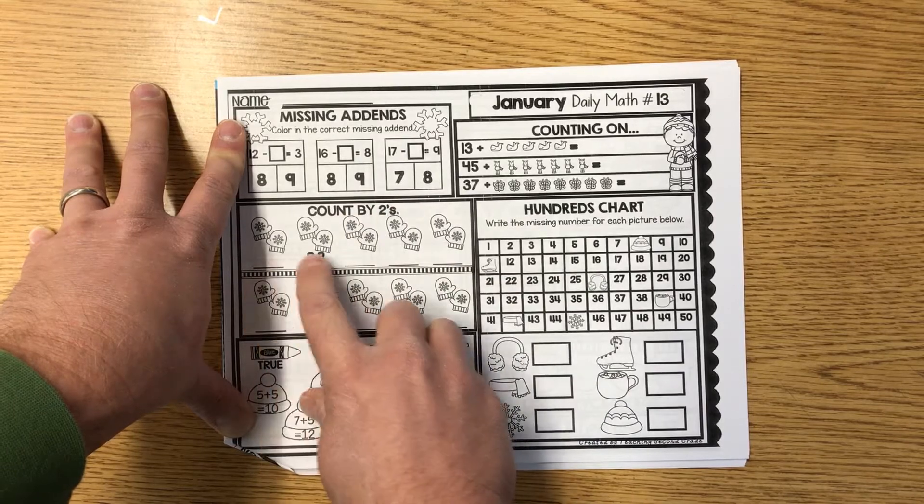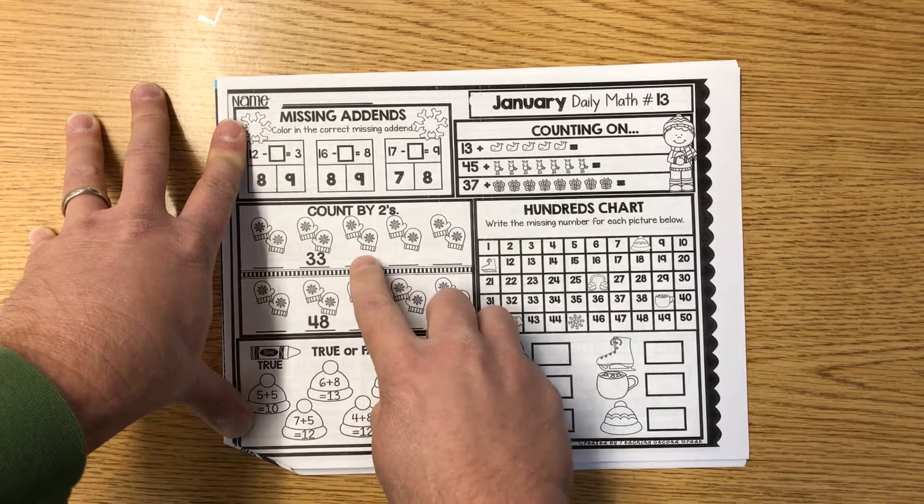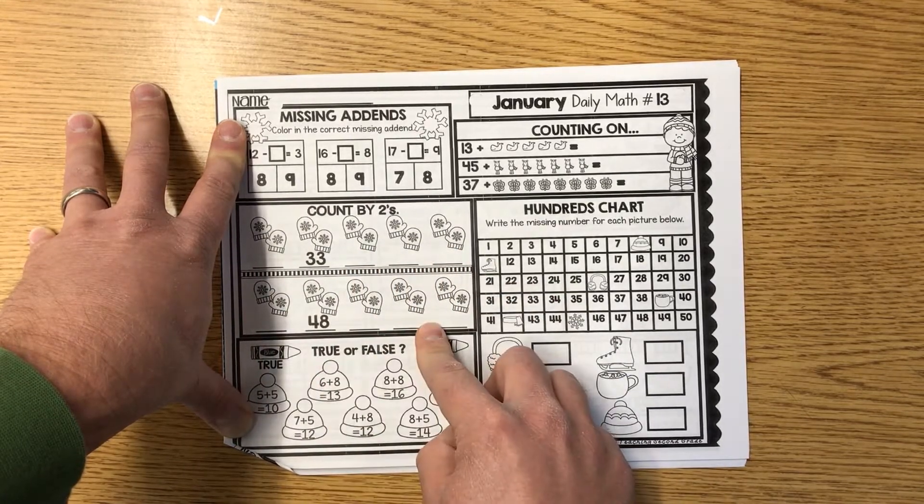Count by twos. Ooh, look, you're counting by twos, but it ends in an odd number. Be careful about that. Count before that and then after that too. All the way through here too, okay?